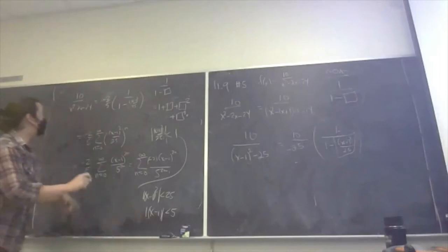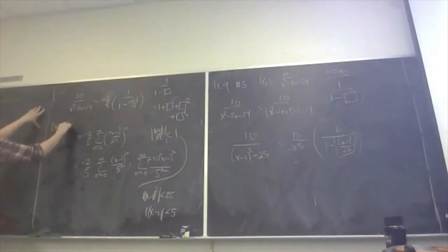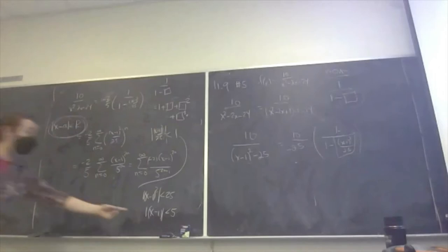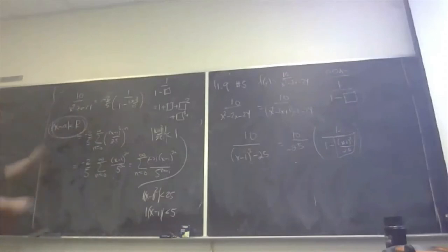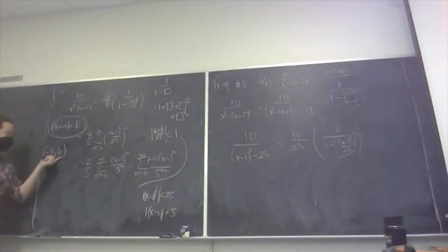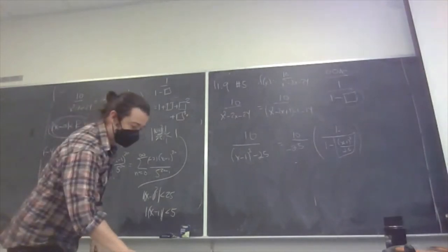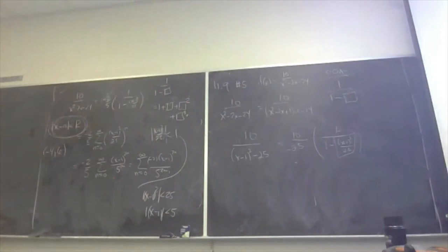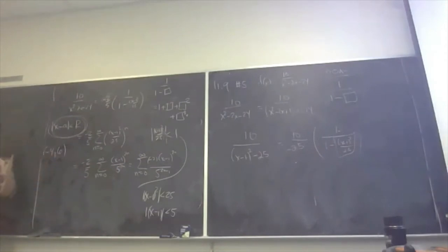Any time you've got something of the form |x minus a| less than r, that's the form that tells you the radius of convergence — it's the distance from the center to the edge. The actual interval of convergence for this is all numbers five units above 1 and five units below 1. We leave the endpoints out because power series are typically considered on the interior of their intervals, and the radius is the important answer.